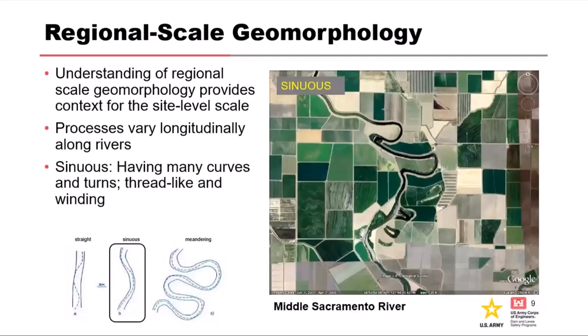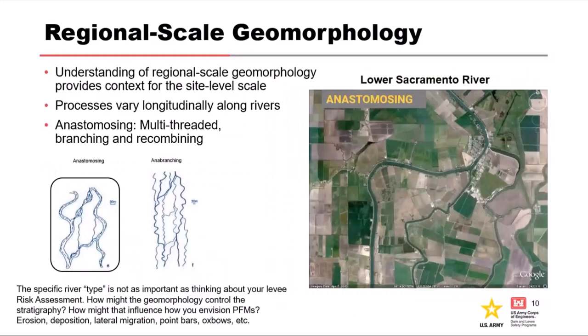Moving a little lower in the watershed, down in the estuary environment, the Sacramento River changes again in its planform — it starts to branch out into several different channels, what in geomorphology we call anastomosing or anabranching. The process shifts from an erosional meandering state to more of an overbanking, flooding, depositional state. It builds up what we call natural levees along the ridges of the channel, on which the artificial flood control levees end up getting constructed.